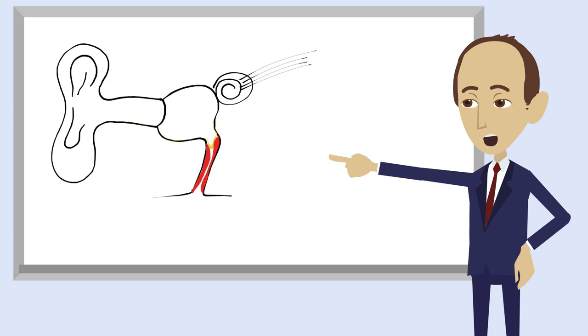Because the eustachian tube is not going to grow any wider, often just using grommets isn't a long-term solution. This leads to having to have a grommet insertion every year or so to continue to bypass the problem which you are not solving.